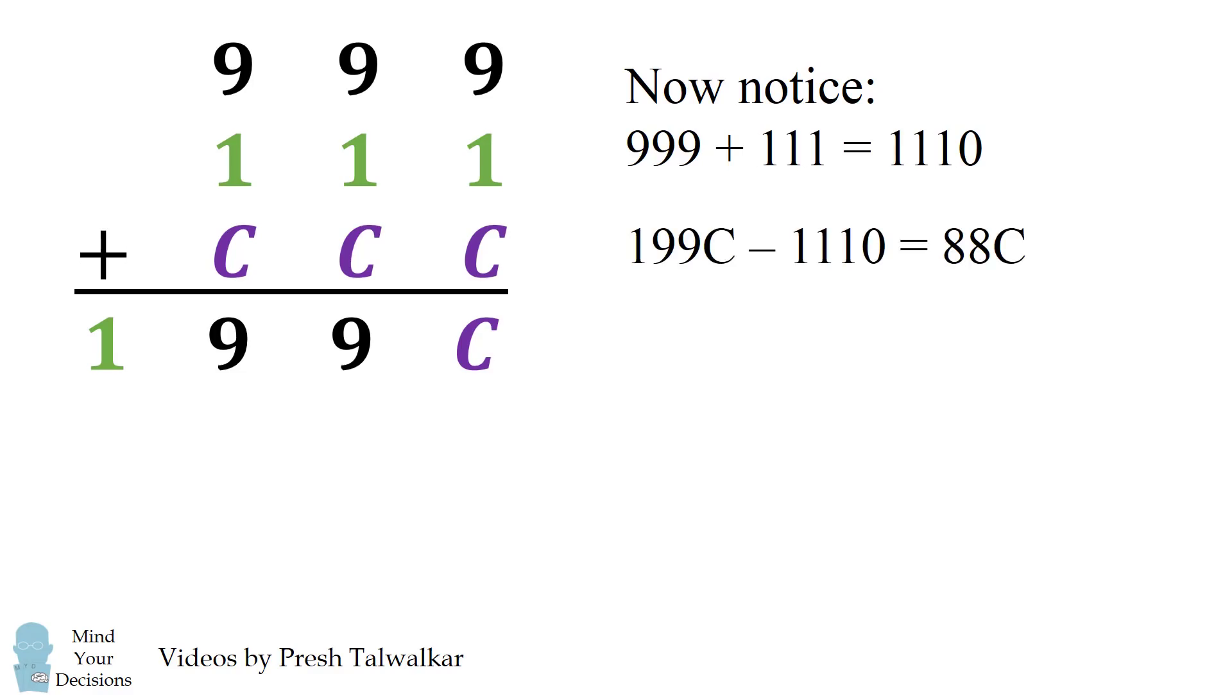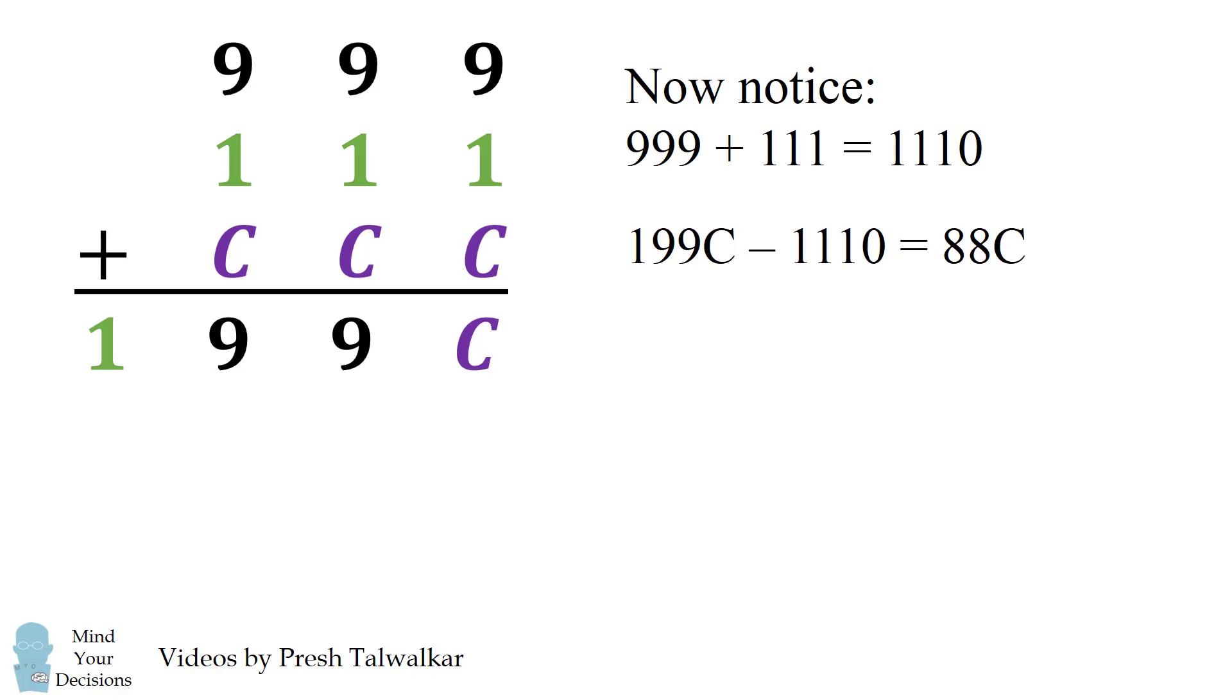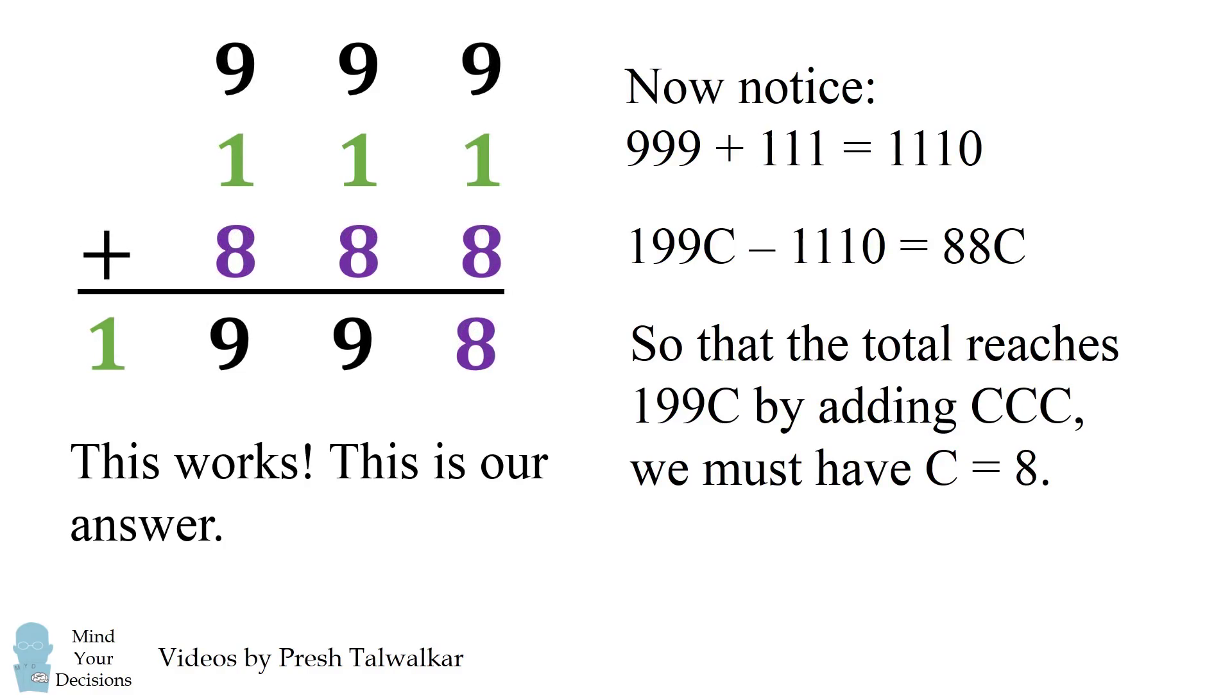So if we take 1990C minus 1110, we end up with 880C. So that the total reaches 1990C by adding CCC, we must have C is equal to 8. So we put that in and we end up with something that works. This is our answer. We have 999 plus 111 plus 888 equals 1998.